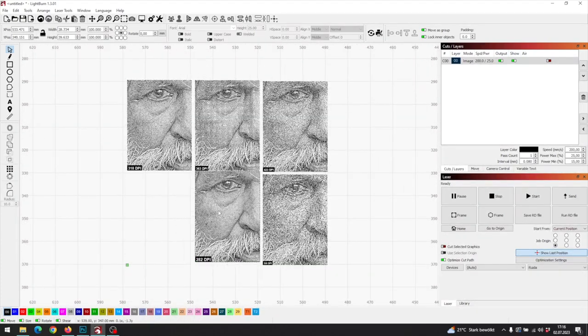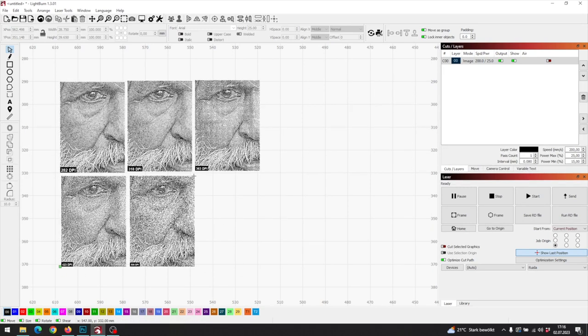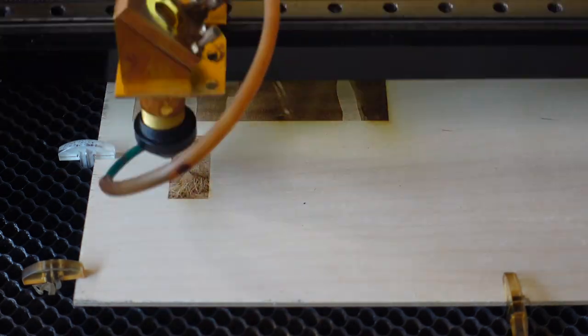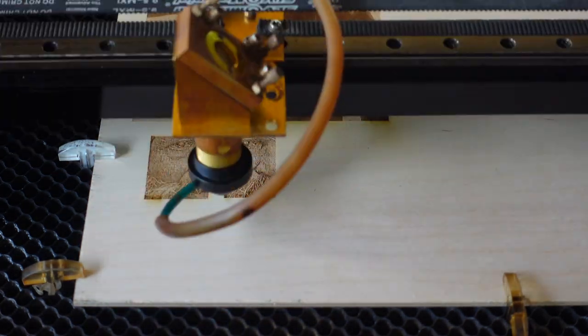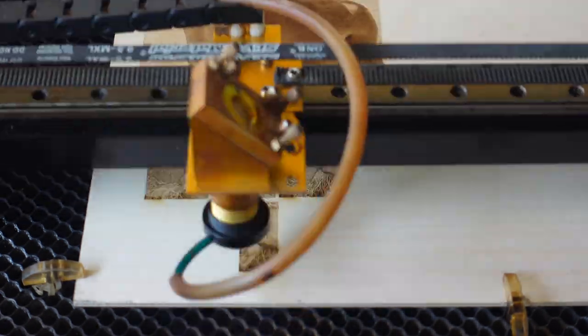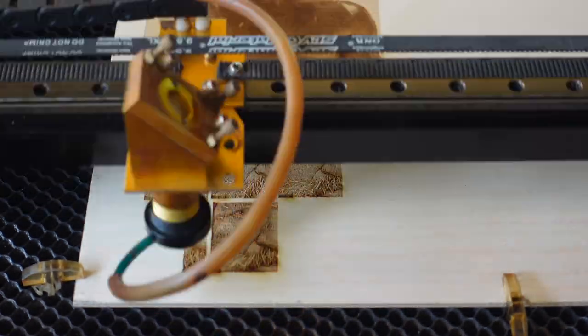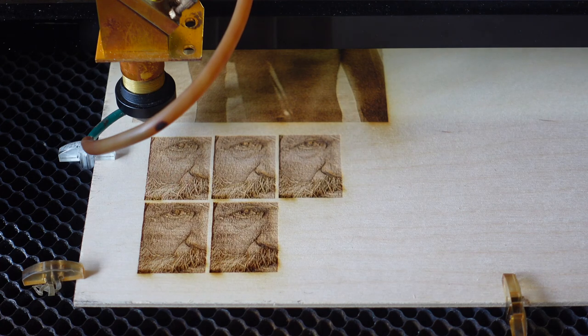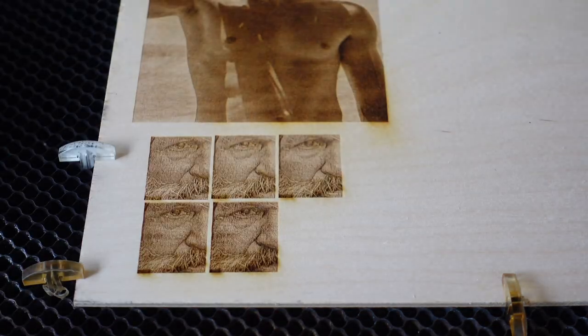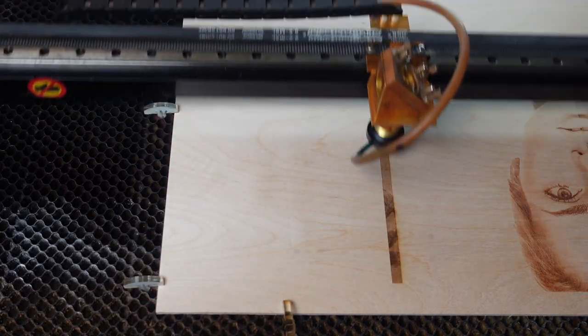Arrange them however you want, set the image mode to pass through, and press start. As you see it will now engrave different parts of the image with each DPI to find out the best one for you. You only have to do the DPI test once per material.